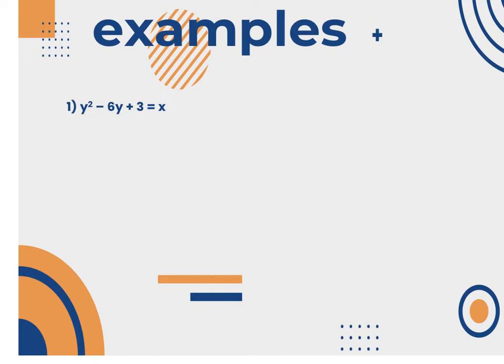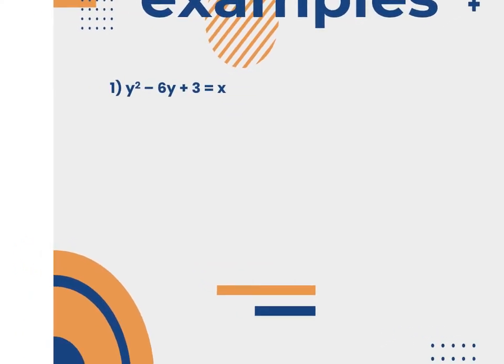This equation only has a y squared, so this is going to be a parabola. When it's a parabola, we're going to move everything away from the variable that is squared. Since y is squared, I'm going to leave the y variables on the left side, move the constant, and move the x variables to the other side. After rearranging, we have y squared minus 6y, leave a blank space, equals x minus 3.